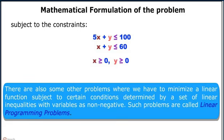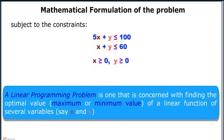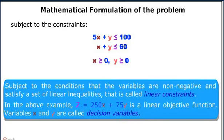Such problems are called linear programming problems. A linear programming problem is one concerned with finding the optimal value — maximum or minimum — of a linear function of several variables, say x and y. Subject to the conditions that the variables are non-negative and satisfy a set of linear inequalities called linear constraints. In the above example, z = 250x + 75y is the linear objective function, and the variables x and y are called decision variables.